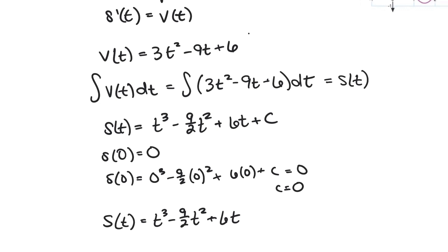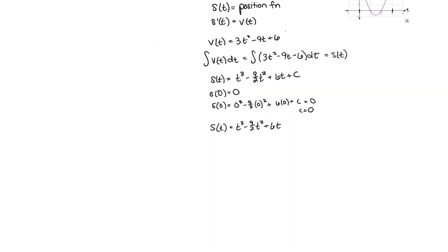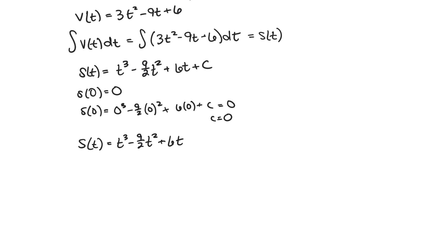Now it doesn't really matter what the initial position was because we're only looking for displacement. We're looking for how much the position changed. So if we want to know how much the position changed from the initial position which we already said was 0 until after 3 hours, if we put in 3 here we should get 3 cubed minus 9 halves times 3 squared plus 6 times 3, which is 27 minus 81 halves plus 18. And those numbers should look really familiar. That is what we got at the end of the other way of solving this problem, and it came out to 4 and a half miles.